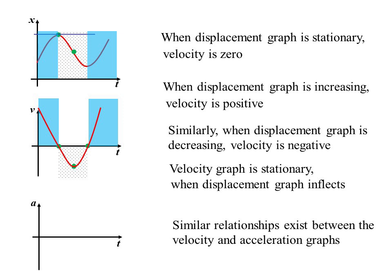You could do exactly the same thing now to create the acceleration time graph from the velocity graph. The stationary point must become the t-intercept down here. When the velocity graph is decreasing, then acceleration is negative. And when the velocity graph is increasing, the acceleration graph is positive. We end up with a straight line.